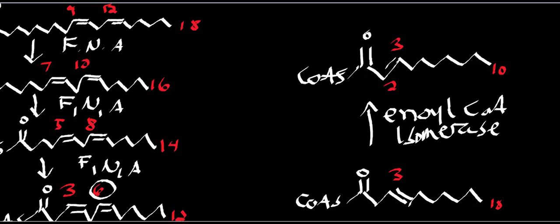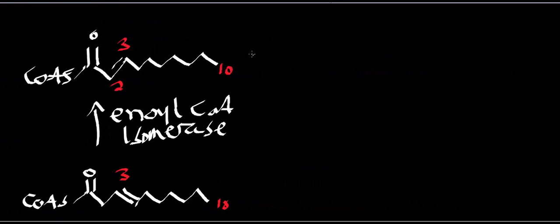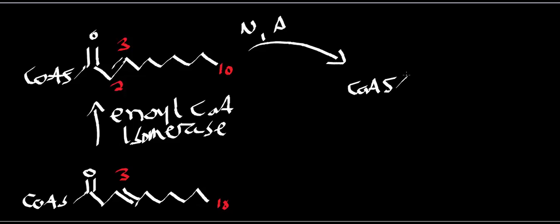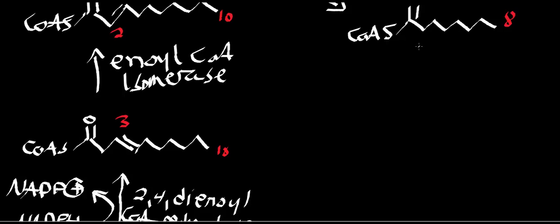Now this 10-carbon intermediate goes into normal beta-oxidation. One round shortens it by two carbons, generating an NADH and an acetyl-CoA, leaving us with an 8-carbon fatty acid. Then we do basically three more rounds of beta-oxidation, cleaving off acetyl-CoA units, generating four acetyl-CoA, three NADH, and three FADH2.